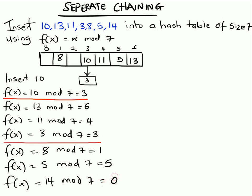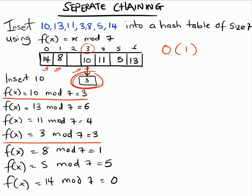14 is inserted at position 0 without any problem. Now, if the program looks for value 3, all hash table operations aim to be O(1), but since 3 is stored in the linked list at position 3, the algorithm will go downwards through the chain to find 3 or whatever value it's looking for.